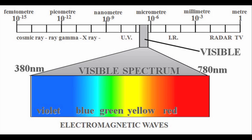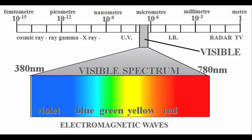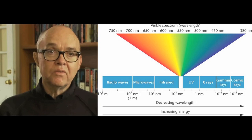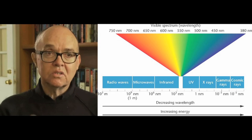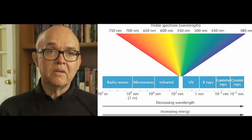Ultraviolet light has a wavelength of about 380 nm and a frequency of 10 to the power of 15 Hz, which is just outside the range of visible light. Its wavelength is shorter than visible light and its frequency is faster.